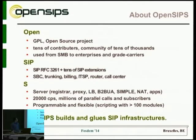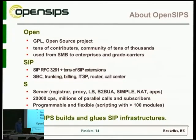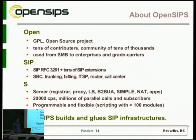OpenSIPS is also highly scalable — it can handle up to 20,000 calls per second and millions of parallel calls. We achieve these high numbers because we are a SIP server handling just the signaling part; there is no media flowing in or out. Because of this, you can use it for various scenarios like SBCs, trunking, call centers, registrations, proxies — or to glue together various parts of your existing SIP network.